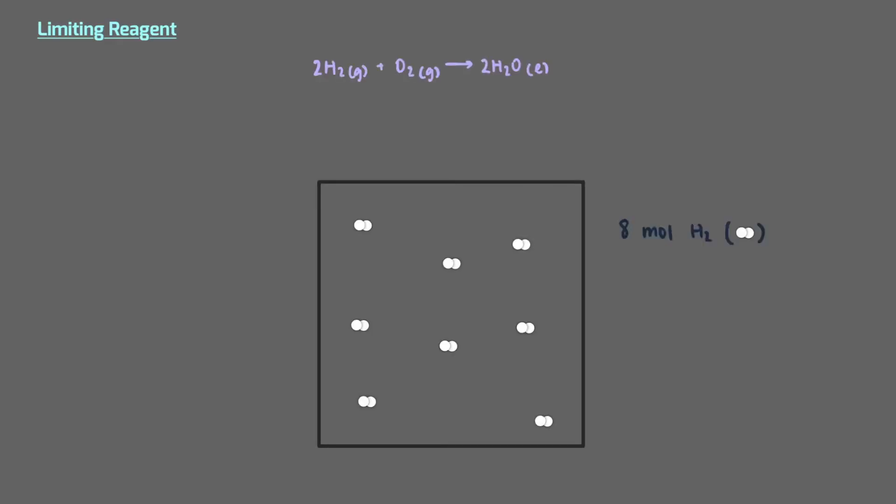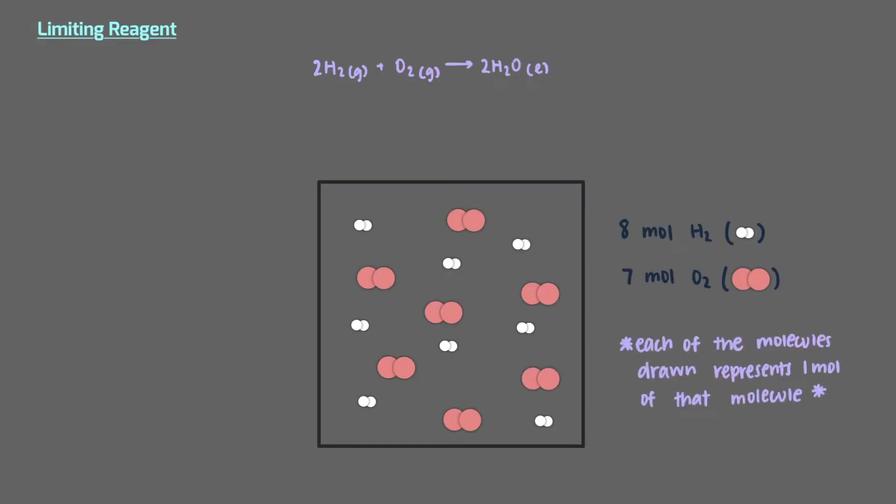In this container, we have 8 moles of hydrogen and 7 moles of oxygen. We'll assume that each of the hydrogens and oxygens drawn represents a mole of that molecule.